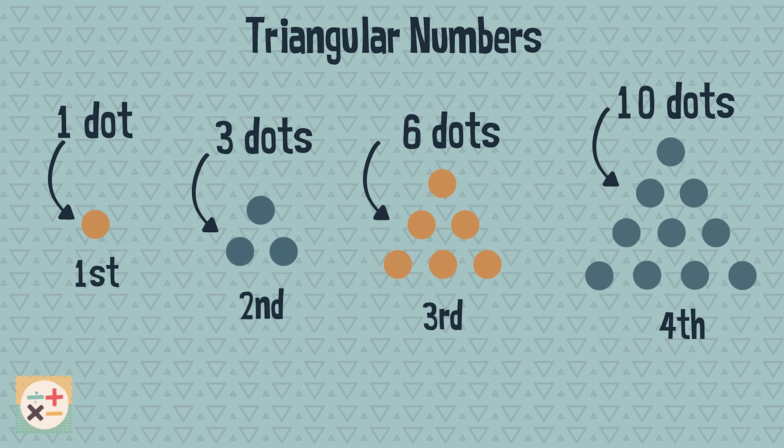You may have noticed that the number of dots on each side of the triangle is the same as the position number of the sequence. For example, the third triangular number has three dots along the base and the sides.